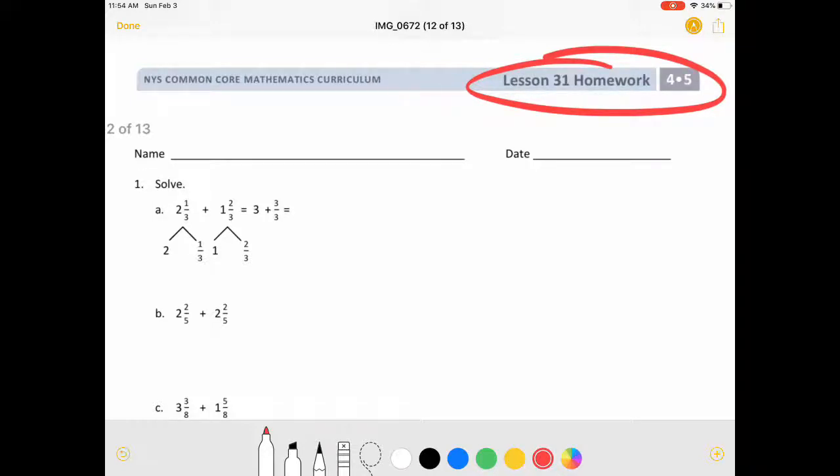So let's start with number one. We have two and one-thirds plus one and two-thirds, so first I'm going to combine the whole numbers to get three, and the fractions to get three-thirds. Well, three-thirds is the same thing as one, so three plus three-thirds is just going to be four.